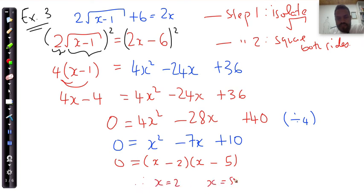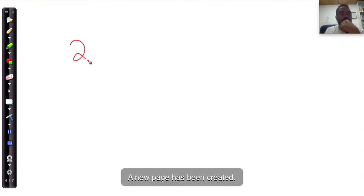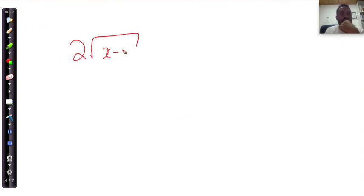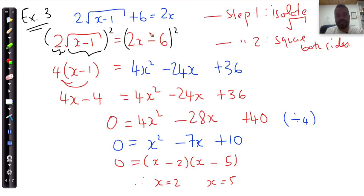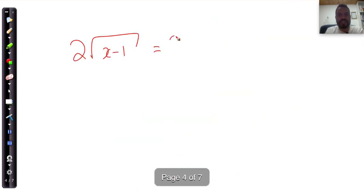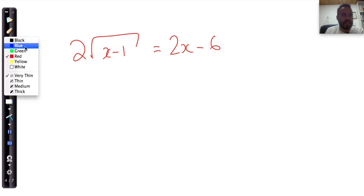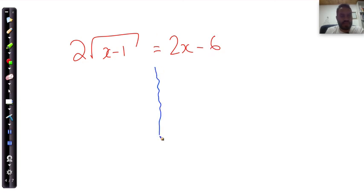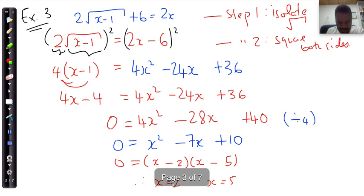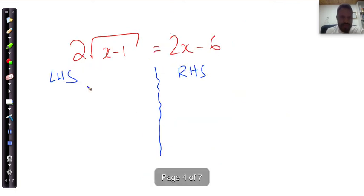Now remember, it's very important to check. And let's just write down the equation for checking: 2 into root x minus 1 is equal to 2x minus 6. I just draw a line in between to say that's what I'm comparing. That's my left-hand side, that's my right-hand side. And I want to check the solutions 2 and 5.